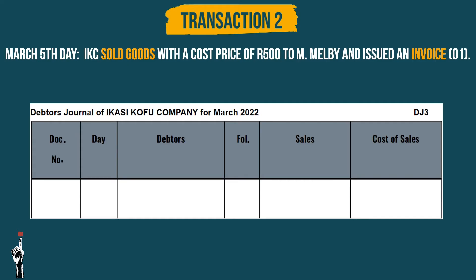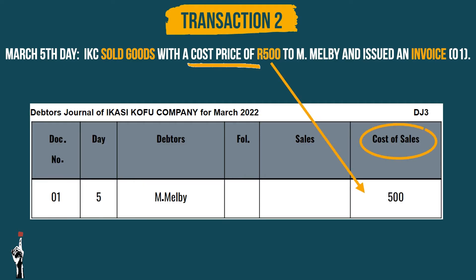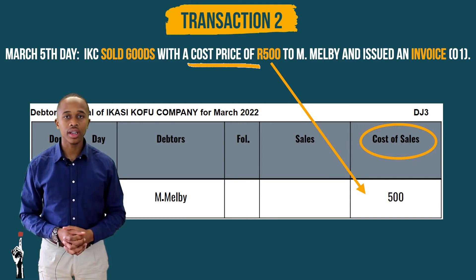The document number will be invoice number 1. The day is the 5th of March. The debtor's name is M Malby. We can record the cost of sales since they gave it to us. But what about the sales column? We will need to calculate this answer.